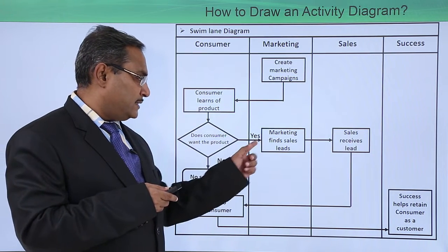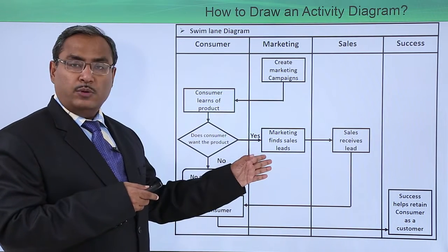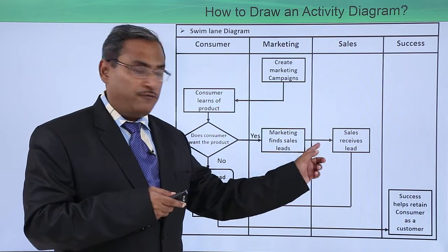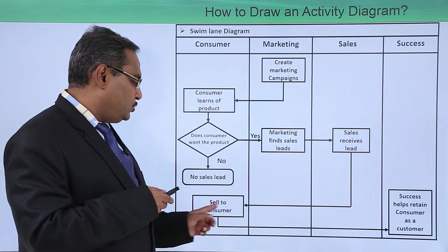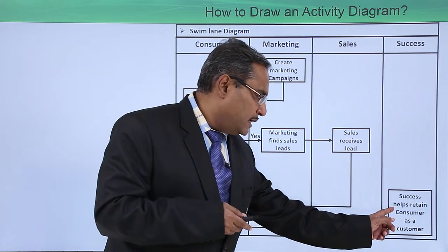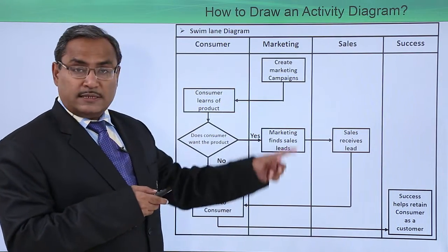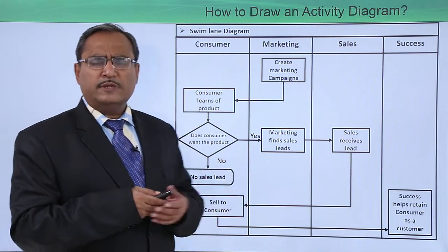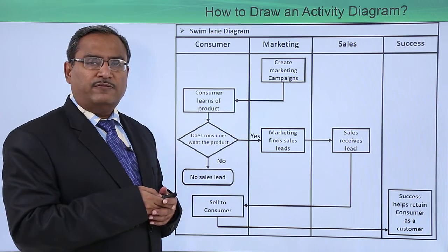If yes, the control flows forward. Marketing finds a sales lead, then control moves to sales, which receives the lead and sells to the consumer — the sale is completed. Then success helps retain the consumer as a customer. This is the swim lane diagram; we cannot have such diagrams in a flowchart, which is why the activity diagram is quite different from a flowchart.